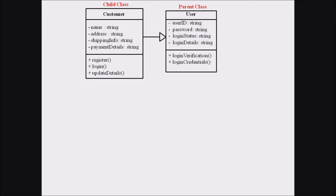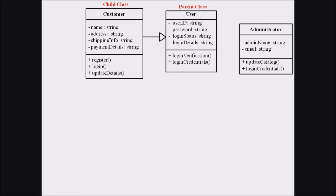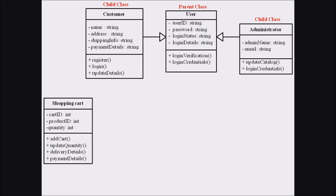Next we are dealing with the Administrator class. The Administrator also has attributes and methods, and there is a relationship with the User class. The Administrator also inherits data from the User class — that is, the Administrator is also a child class of the parent class User. So both child classes, Customer and Administrator, inherit data from the parent class User.